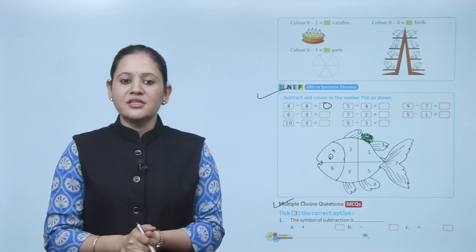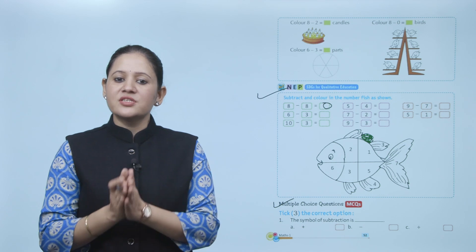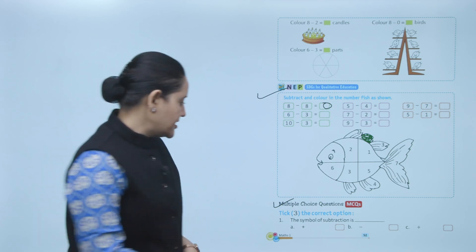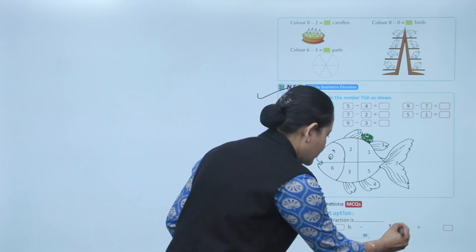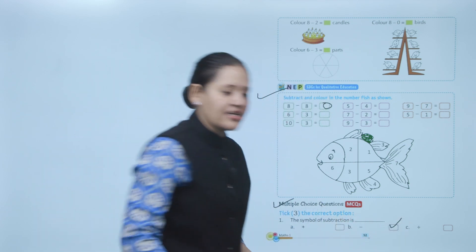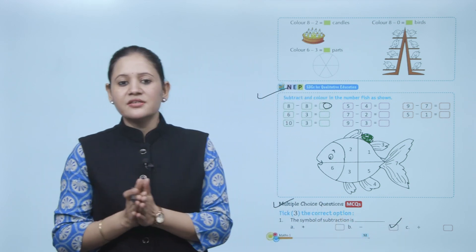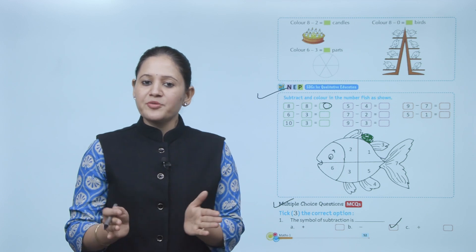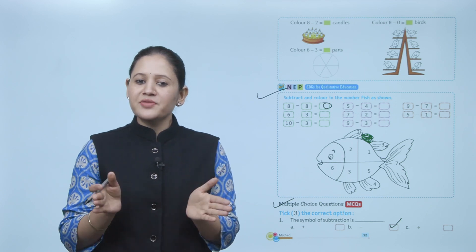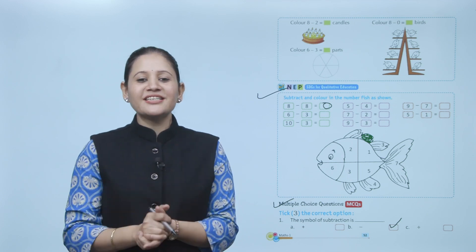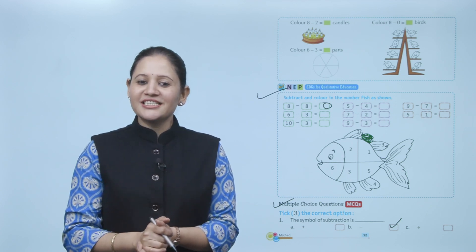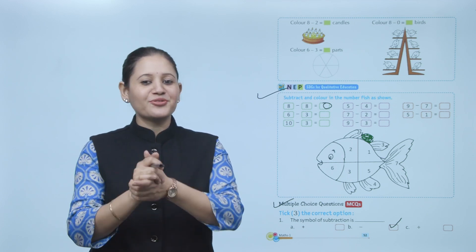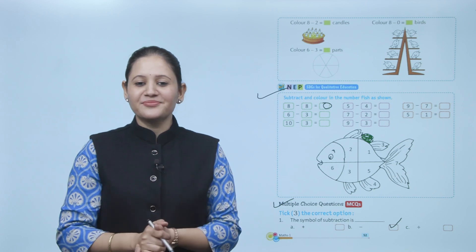Next, multiple choice question — select the correct option. The symbol for subtraction is minus, so option B is the correct answer. Practice all the questions of this chapter. Here we end the chapter. I hope you understood it well — now you have to practice it.